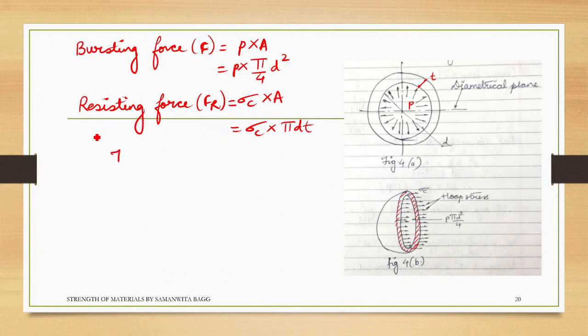For equilibrium, the value of F should be equal to Fr. So this will be p into pi by 4 d squared is equal to sigma_c.